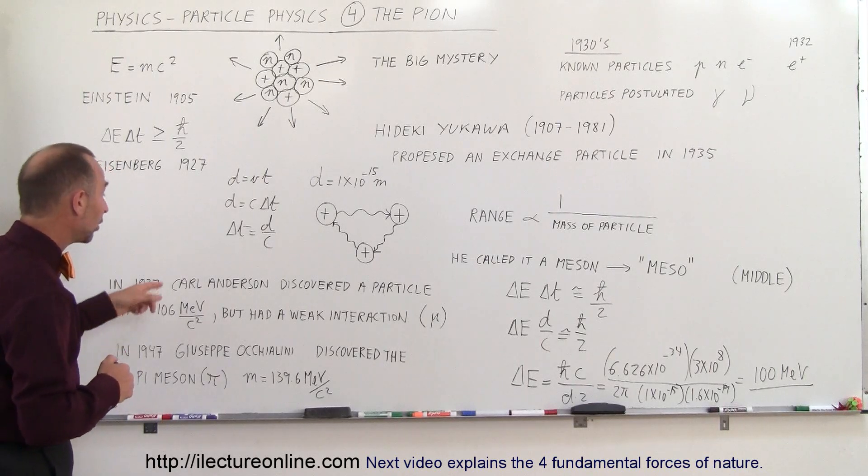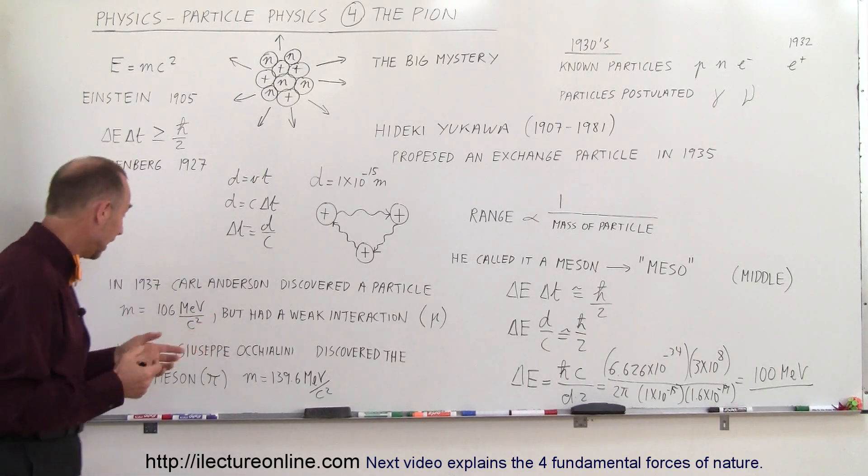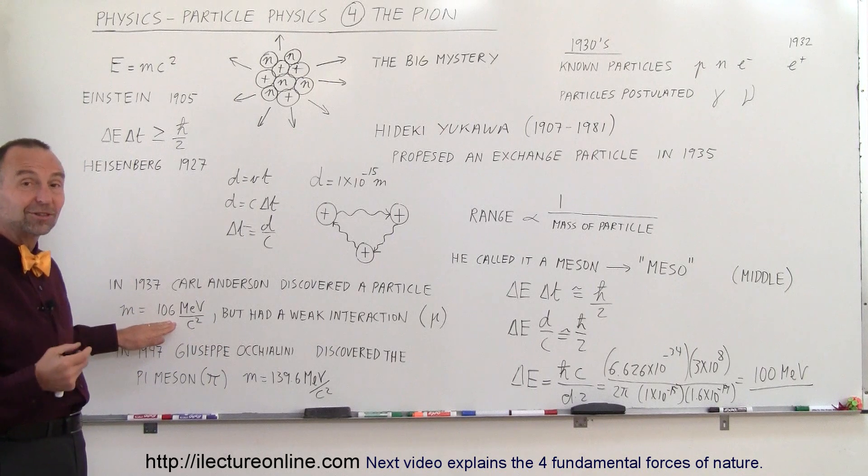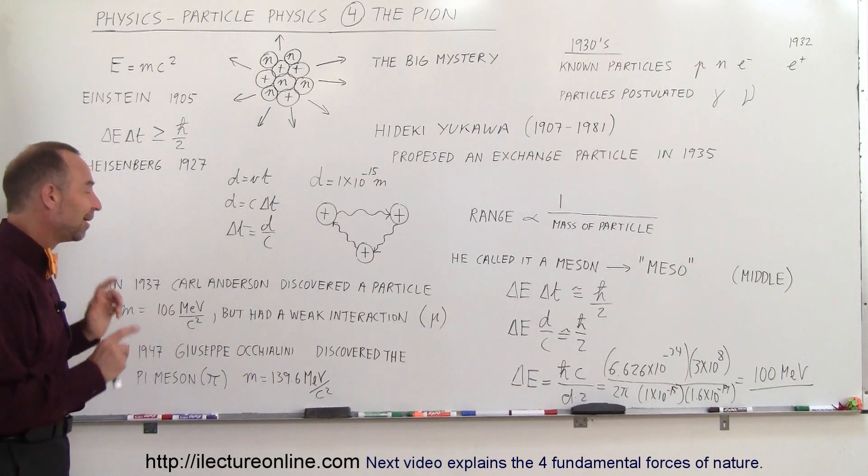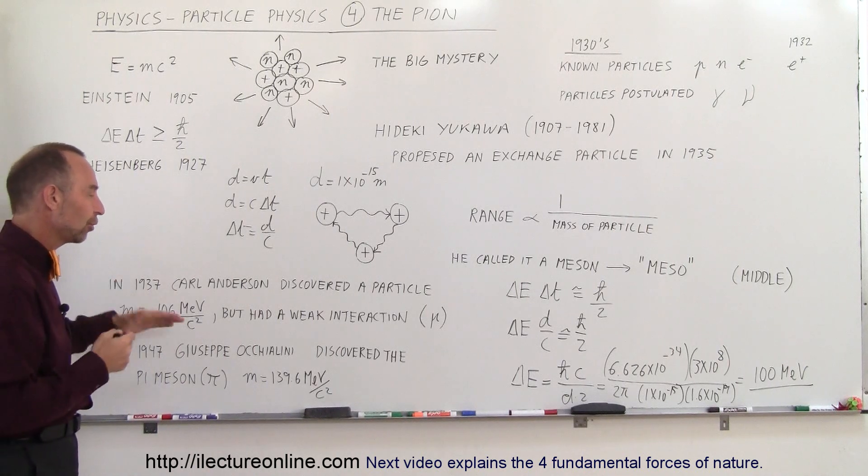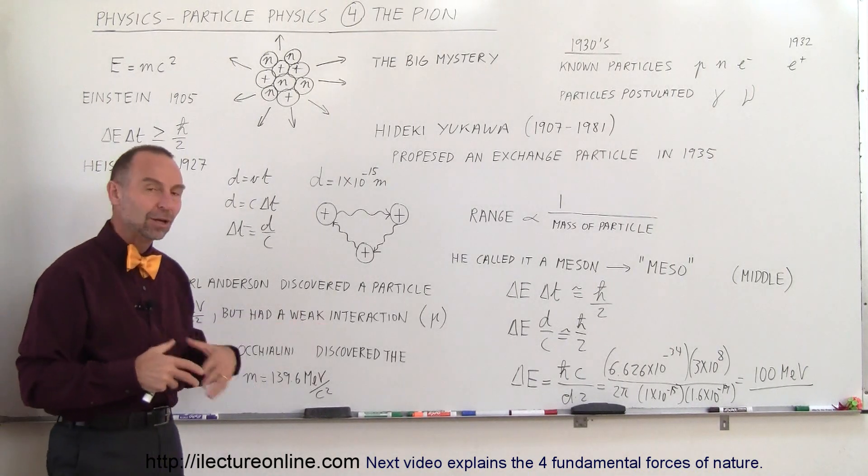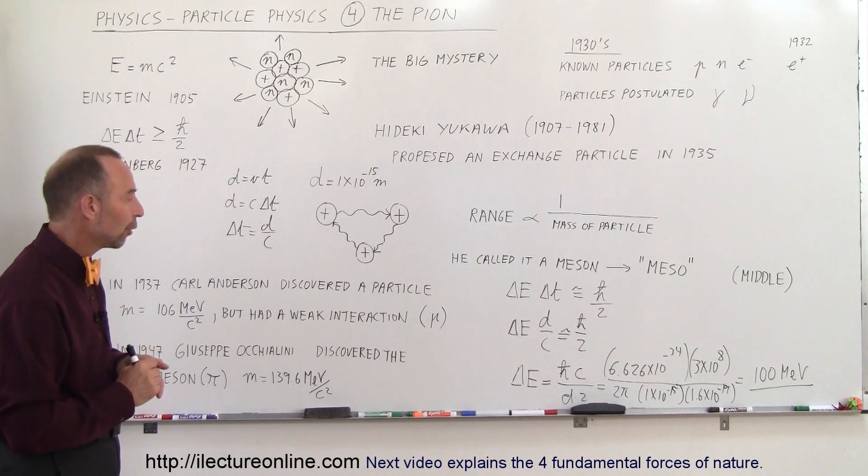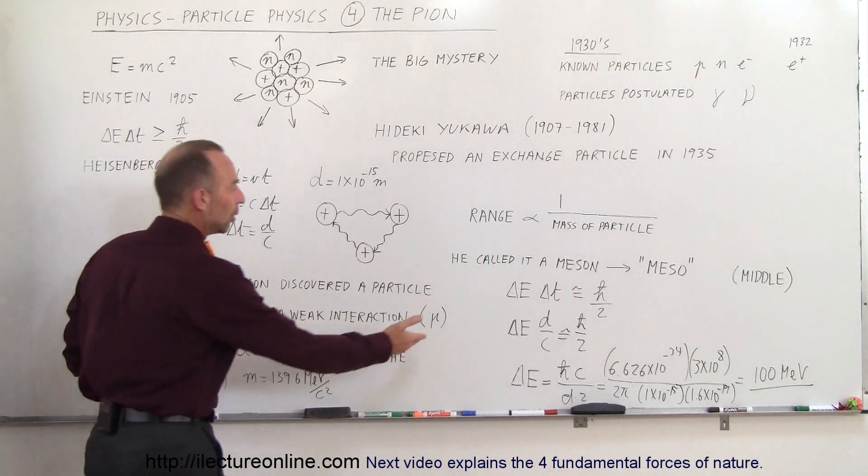So, it turned out in 1937, Carl Anderson discovered a particle, and it turned out to have a mass of 106 million electron volts, but it did not have a strong interaction with the strong force, so therefore they said it had to be not the right particle we're looking for, so we ended up calling that particle a muon.